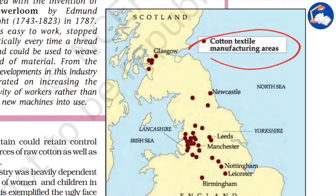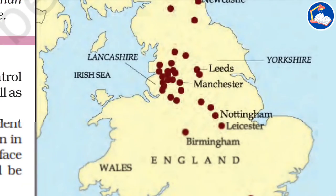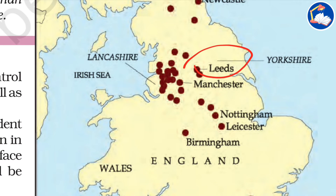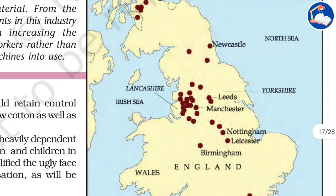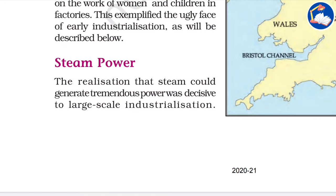This is a map of cotton textile manufacturing areas. The same regions appear as in the coal and iron industry — Leeds, Manchester, and Birmingham. Initially, these areas started as both cotton weaving and coal and iron industrial centers.